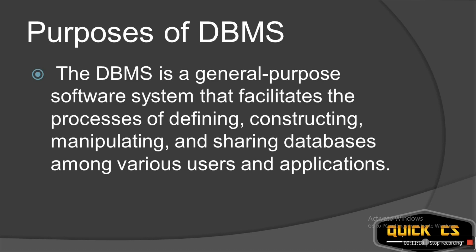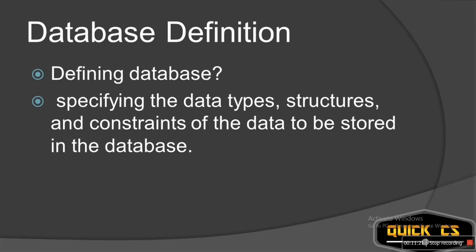What does defining the database mean? You specify the data types, structure, and constraints of the data to be stored. For example, if you want to store numbers you specify the data type as int; for names or words you use strings. Structure refers to how many entries should be made, and constraints set limits like maximum word length or string length. This process of specifying data types, structures, and constraints is called defining the database.